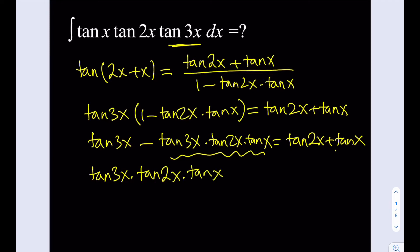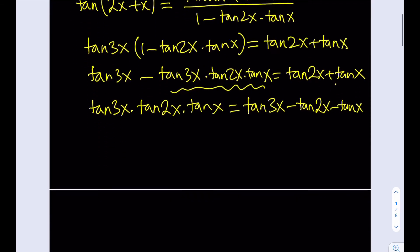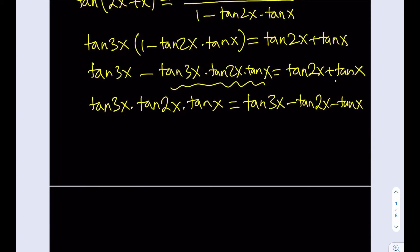So tangent 3x times tangent 2x times tangent x is going to equal, if I subtract this expression from tangent 3x, that's going to equal tangent 3x minus tangent 2x minus tangent x. So something interesting about tangent of these angles is that the product kind of equals this type of sum. Okay?